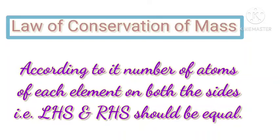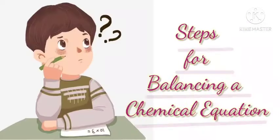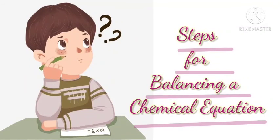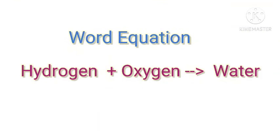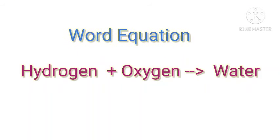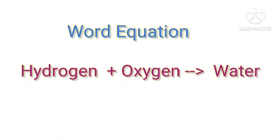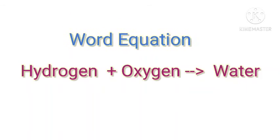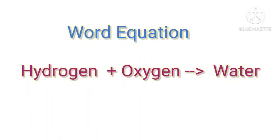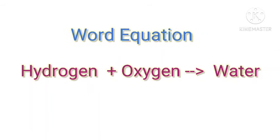So children, we will now learn the steps involved in the balancing of an unbalanced chemical equation. Let us consider the reaction between hydrogen and oxygen to form water.